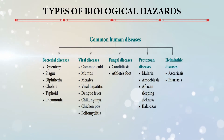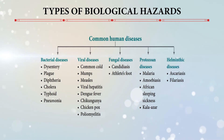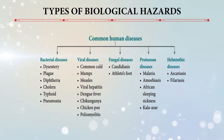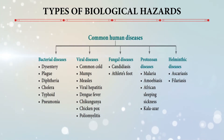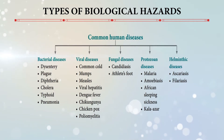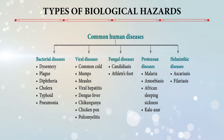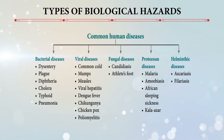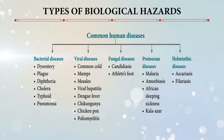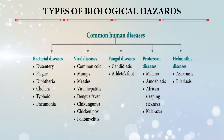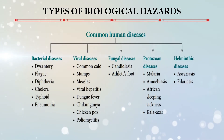A flow chart shows common human diseases. Bacterial diseases include dysentery, plague, diphtheria, cholera, typhoid, and pneumonia. Viral diseases include the common cold, measles, mumps, viral hepatitis, dengue fever, chickenpox, and poliomyelitis. Fungal diseases include athlete's foot and candidiasis. Protozoan diseases include malaria, amoebiasis, African sleeping sickness, and kala-azar. Helminthic diseases caused by nematodes include ascariasis and filariasis, also known as elephantiasis, which also causes roundworms in humans.